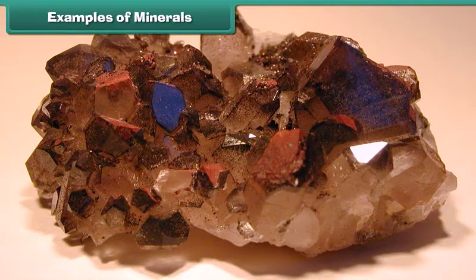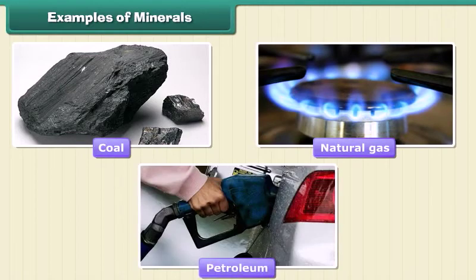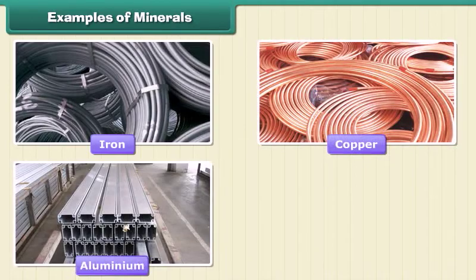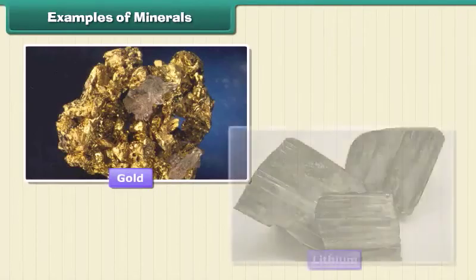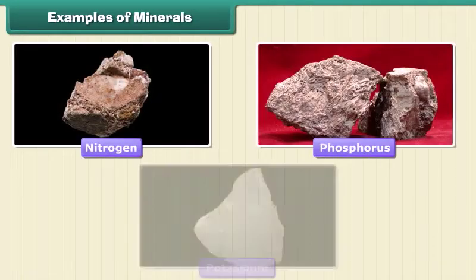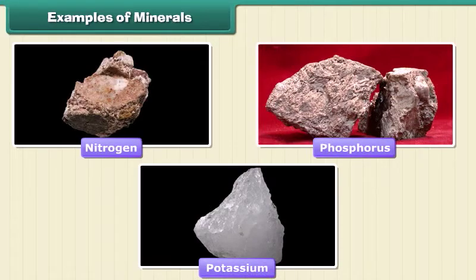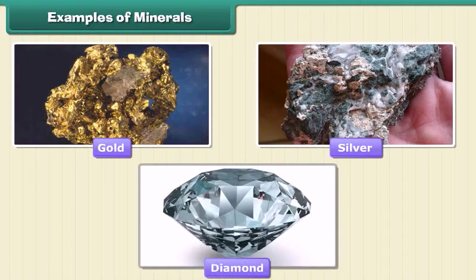Examples of minerals: minerals are very important to humankind. Some minerals are used as fuels — for example, coal, natural gas, and petroleum. Some are used in industries, like iron, copper, aluminium, platinum, etc. Minerals like gold and lithium are used in medicines. Nitrogen, phosphorus, and potassium are used in fertilizers. Gold, silver, and diamond are used in jewelry.